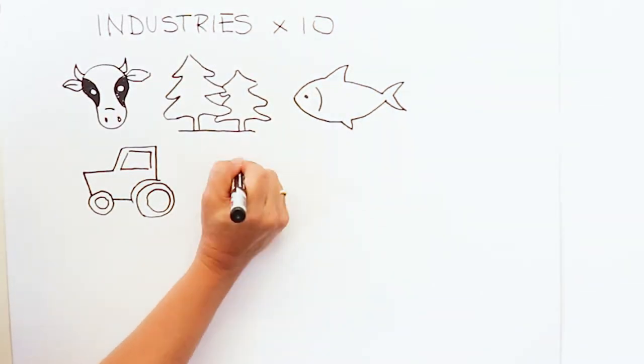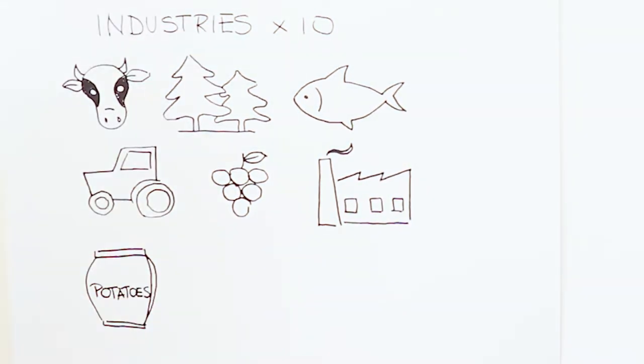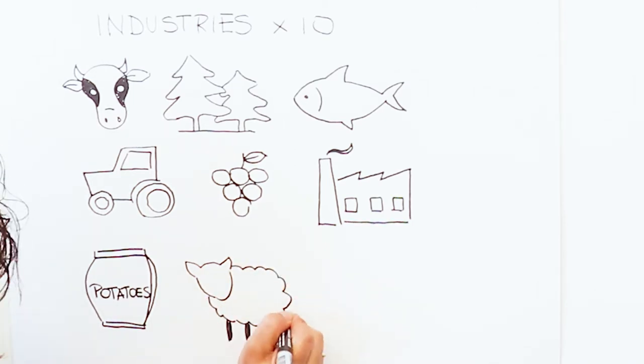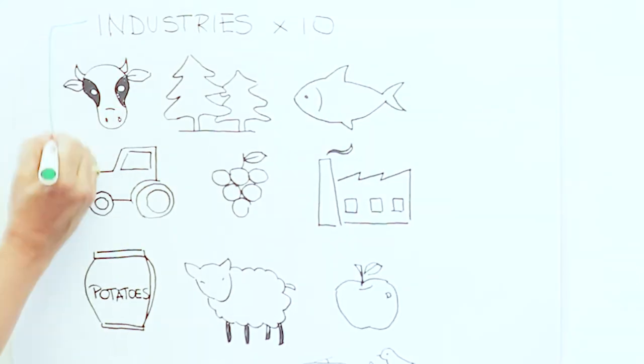So the industries included dairy, forestry, fishing, cropping, viticulture, manufacturing, horticulture such as potatoes and onions, livestock and then also apples and cherries and nature-based tourism.